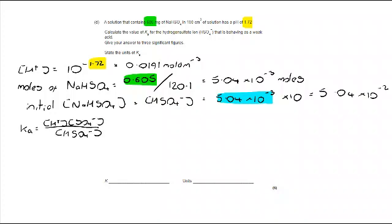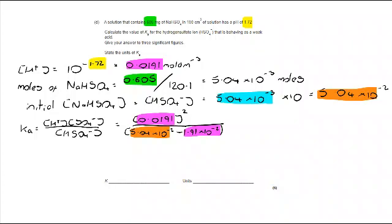From there, I take my Ka expression. Ka is H plus times SO4 over HSO4 minus. I've got my 0.0191 for my H plus. I haven't got my SO4 minus, but actually I can make an assumption that when it dissociates, it will give 1 H plus and 1 SO4 minus. That means H plus concentration is equal to SO4 minus concentration. So I can actually do 0.0191 squared. I'm going to divide that by 5.04 by 10 to the minus 2, my initial moles, take away the amount that have reacted with the H plus, 1.91 by 10 to the minus 2. And that is going to take me to 1.17 by 10 to the minus 2.